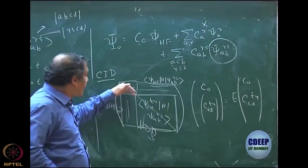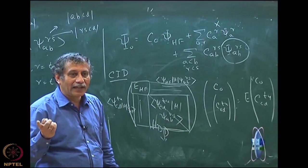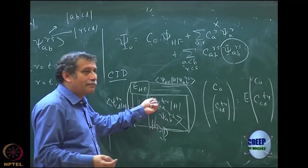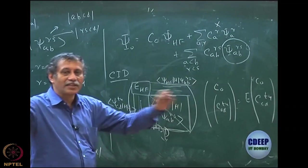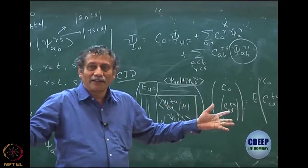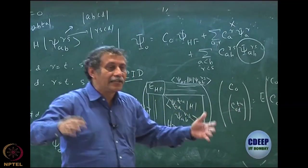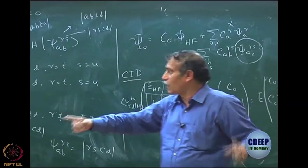Wherever I have diagonal terms here, you are applying rule A, because diagonal term is nothing but the same determinant on both sides. It has to be rule A and the off-diagonal terms can be rule B, rule C and zero or zero depending on what they are.